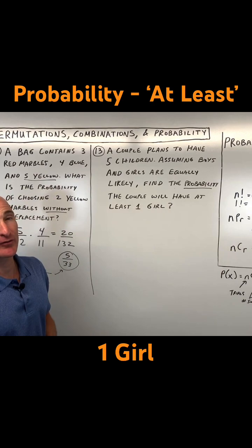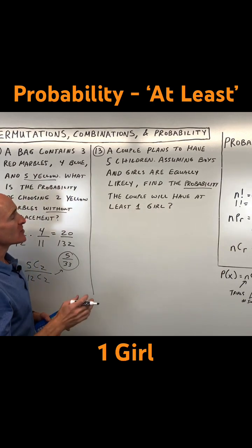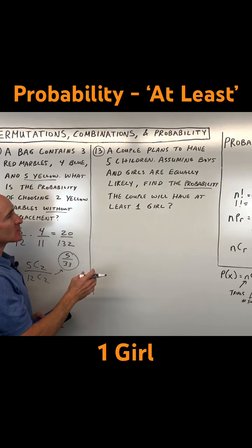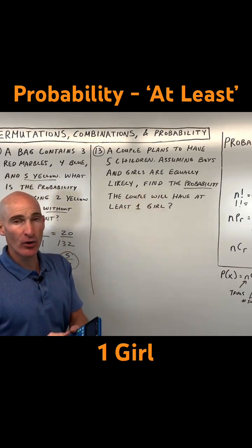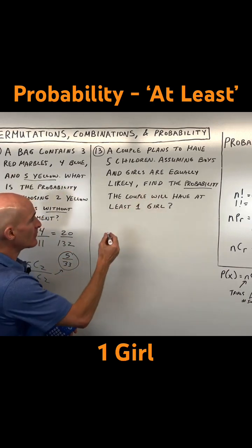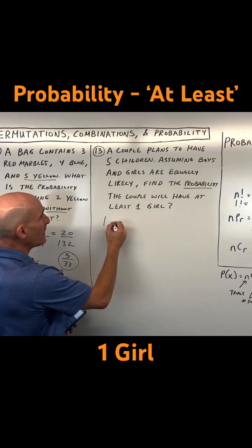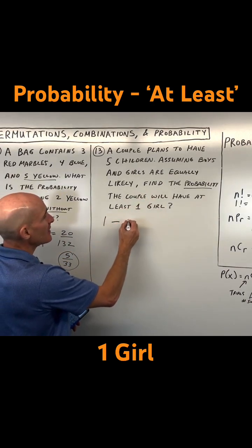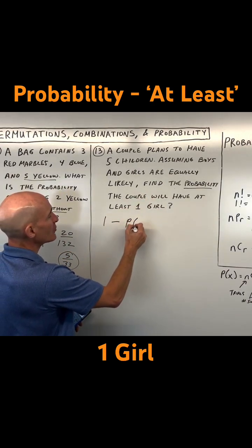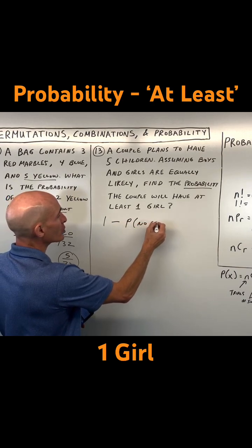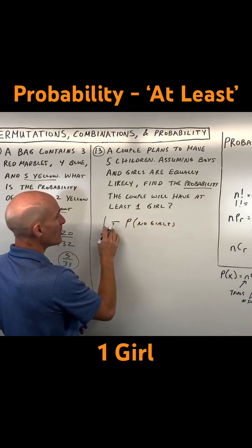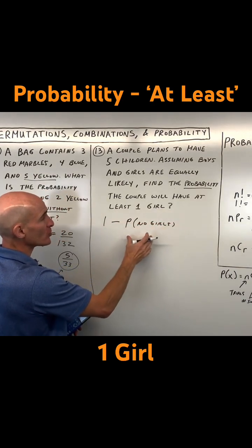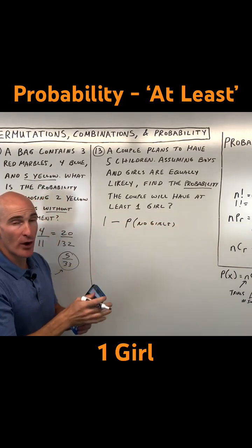So we've seen this a lot in this particular video. With 'at least' in probability, 100% is the total, which is like the number one, minus the probability that they have no girls. So one minus the probability of no girls means it's one or more.